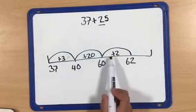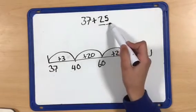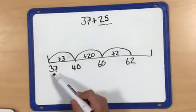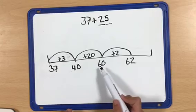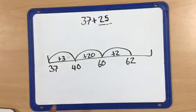Now let's just check. 20 add 2 add 3 is 25, so I've added the right thing. 3 add 37 is 40. 20 add 40 is 60, and 2 add 60 is 62.